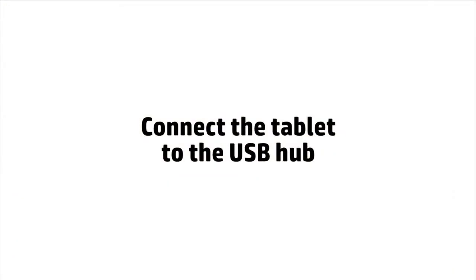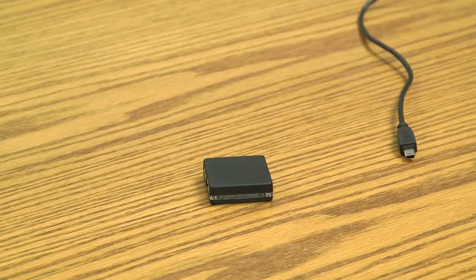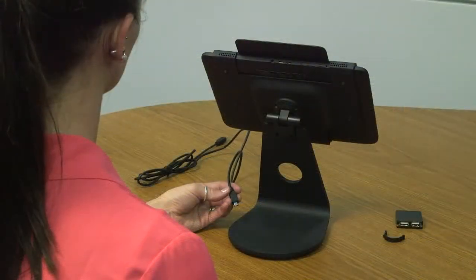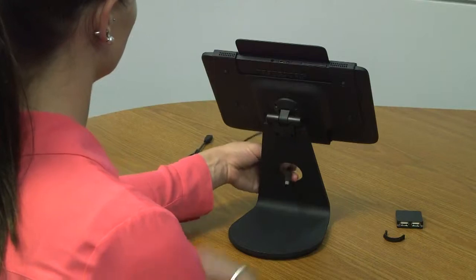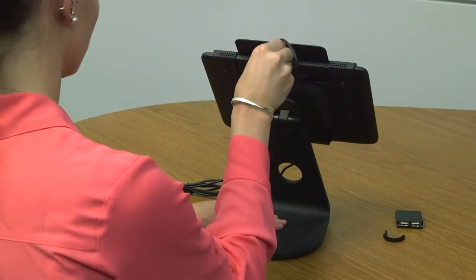For this step, you will need the USB hub and the micro-to-mini USB cable. First, run the micro-to-mini USB cable through the circular hole in the stand. Connect the micro-connector of the cable to the micro-USB port on the tablet.